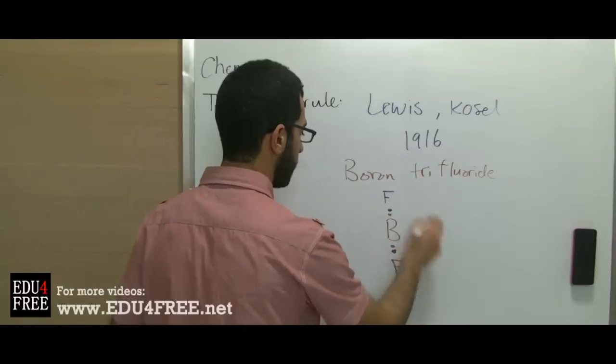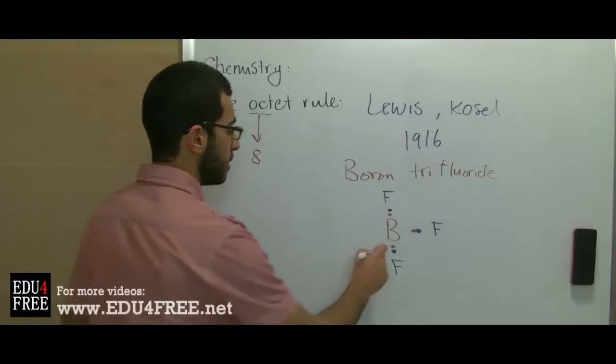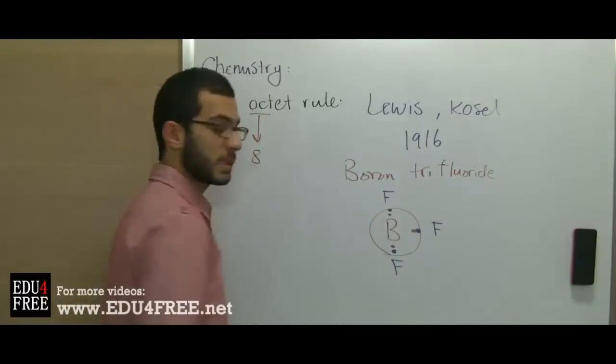Chlorine here shares 3 electrons, 1 by each atom, and boron shares 3 electrons. The total is 6 electrons, not 8.